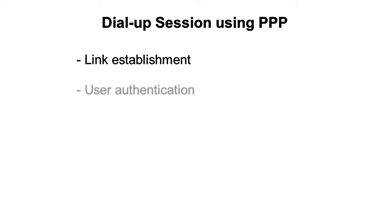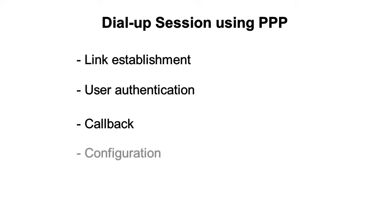The second stage is user authentication. Point-to-Point Protocol uses one of several authentication protocols, including PAP, CHAP, and Microsoft Challenge Handshake Authentication Protocol. The third stage is callback: Point-to-Point Protocol callback control is Microsoft's implementation of PPP.